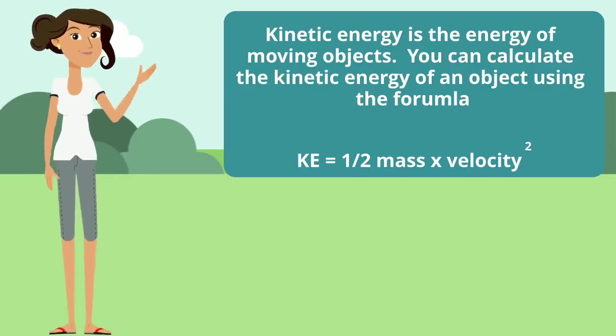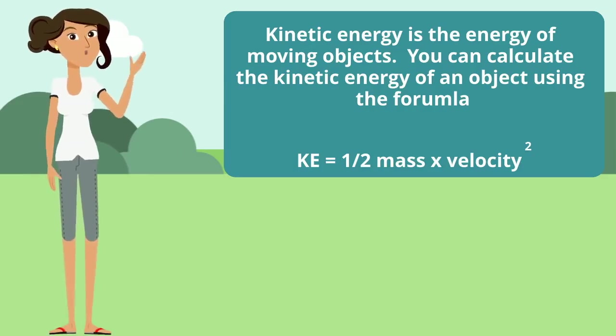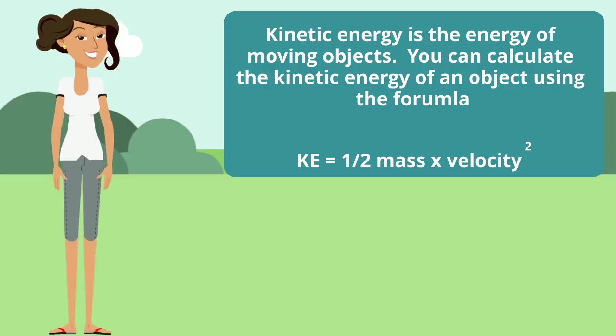Kinetic energy is the energy of moving objects, and you can calculate the kinetic energy of an object using the formula kinetic energy equals half the mass times velocity squared.